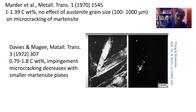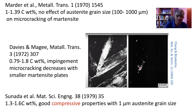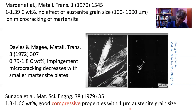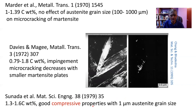Shortly afterwards, in 1979, a further study identified a different conclusion from the work of Marder and Krauss. Sunada and co-workers produced a grain size of one micrometer in these very high carbon steels, quenched to martensite, and obtained good properties in compression — about 10% ductility. This supports the conclusion that Davies and Magee reached: the extent of microscopic cracking decreases with smaller martensite plates.